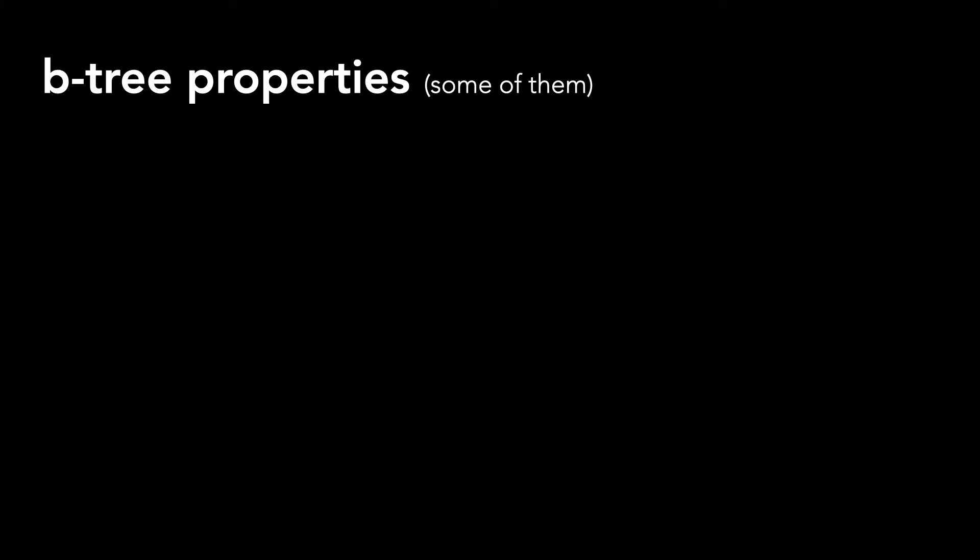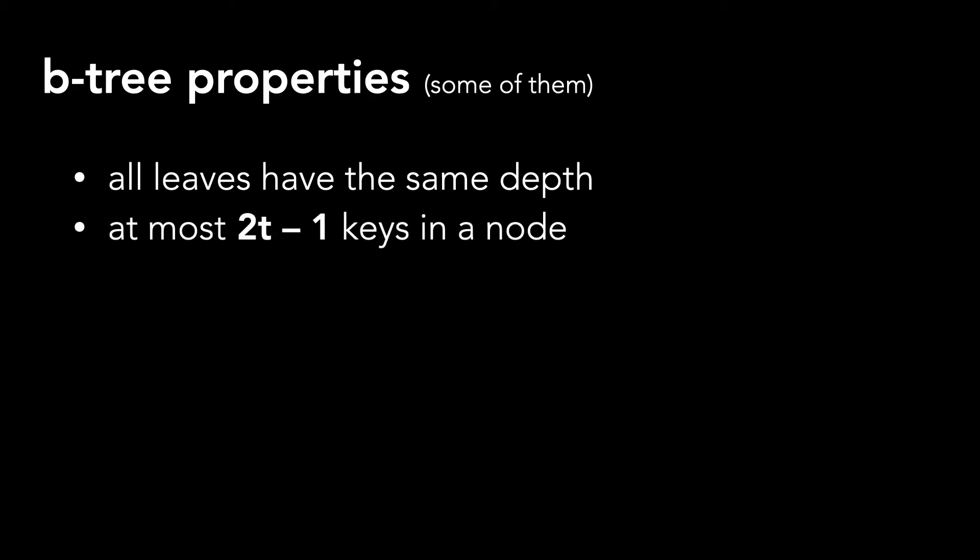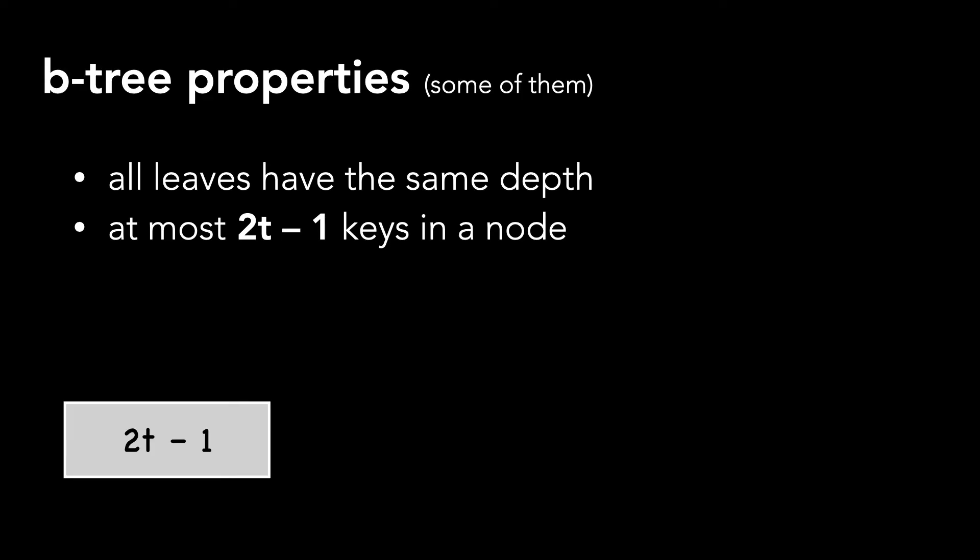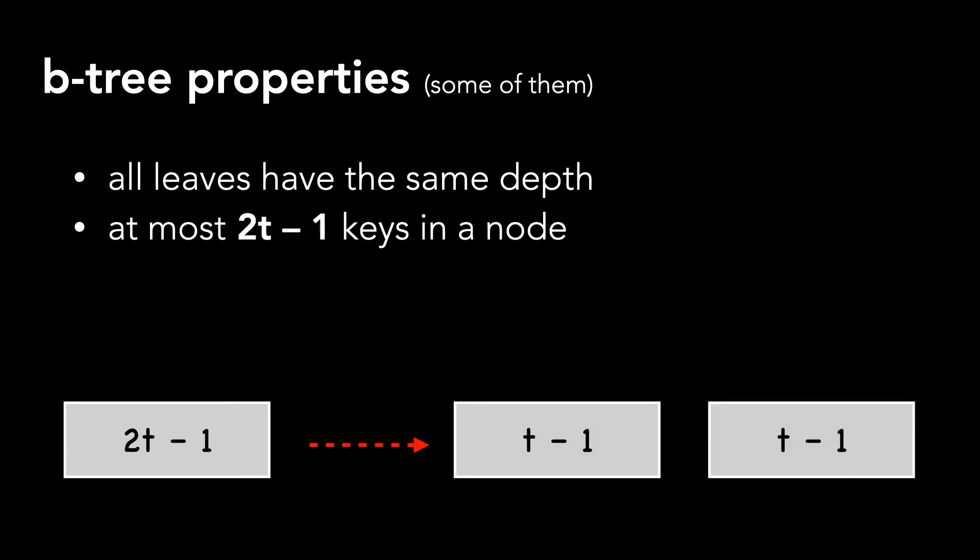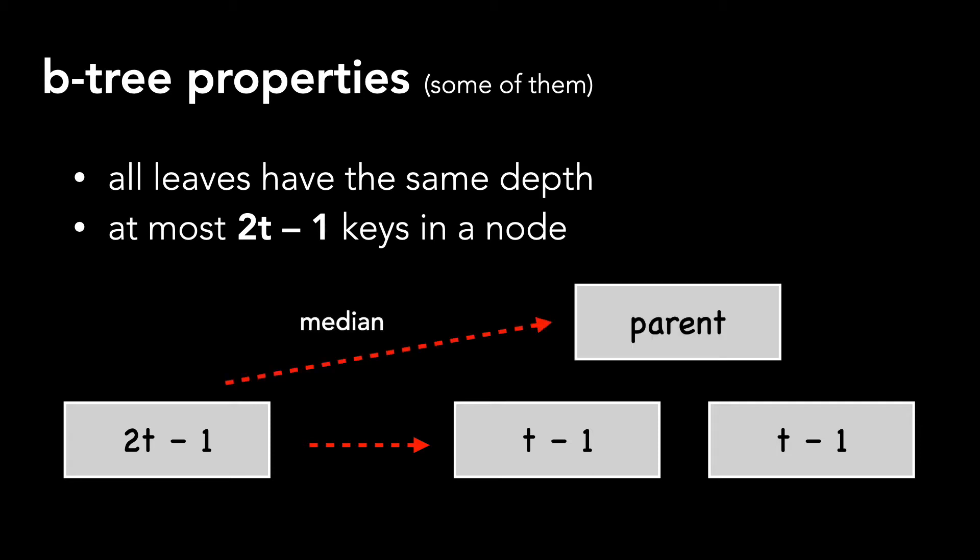Namely, all leaves have the same depth and a node may contain at most two times T minus one keys. To accommodate this, when we have a full node, we must split the node into two, each having T minus one keys. We move the median key into the parent node.